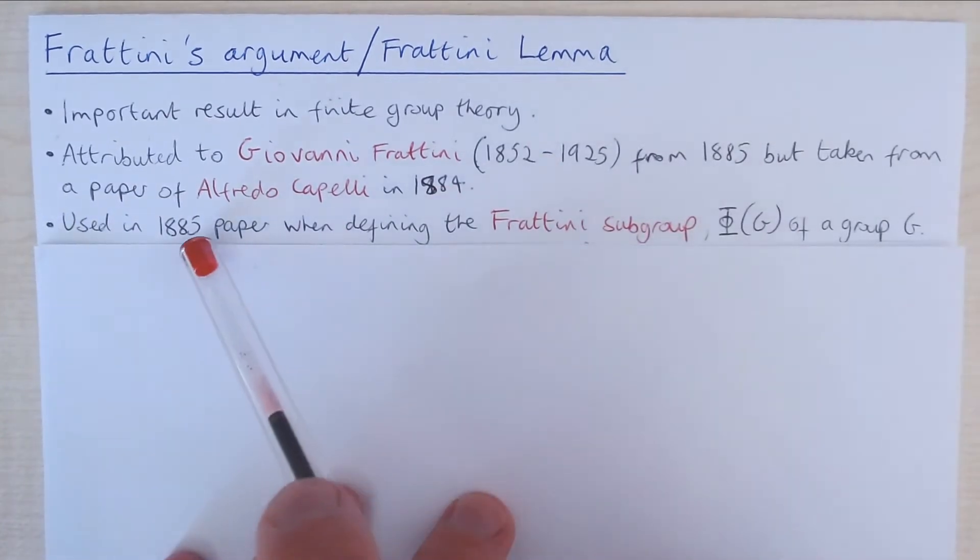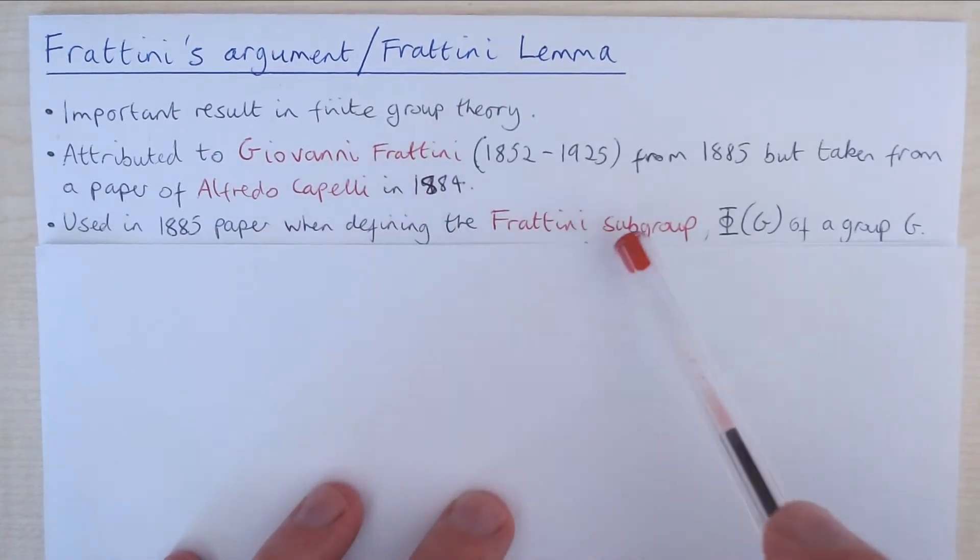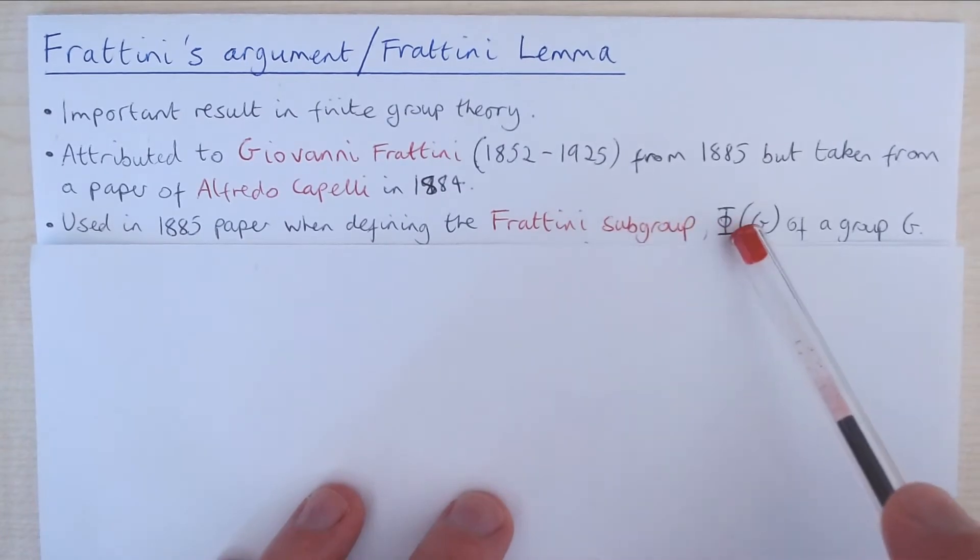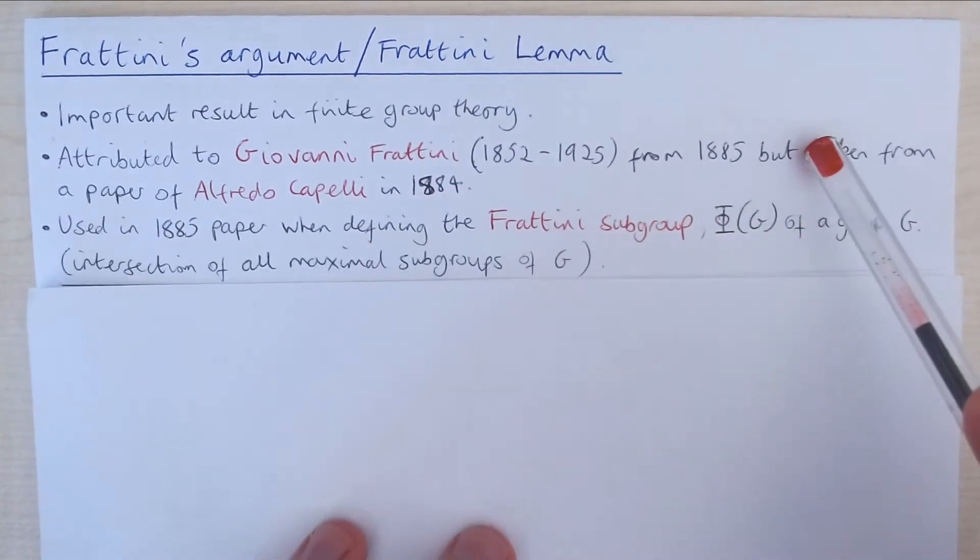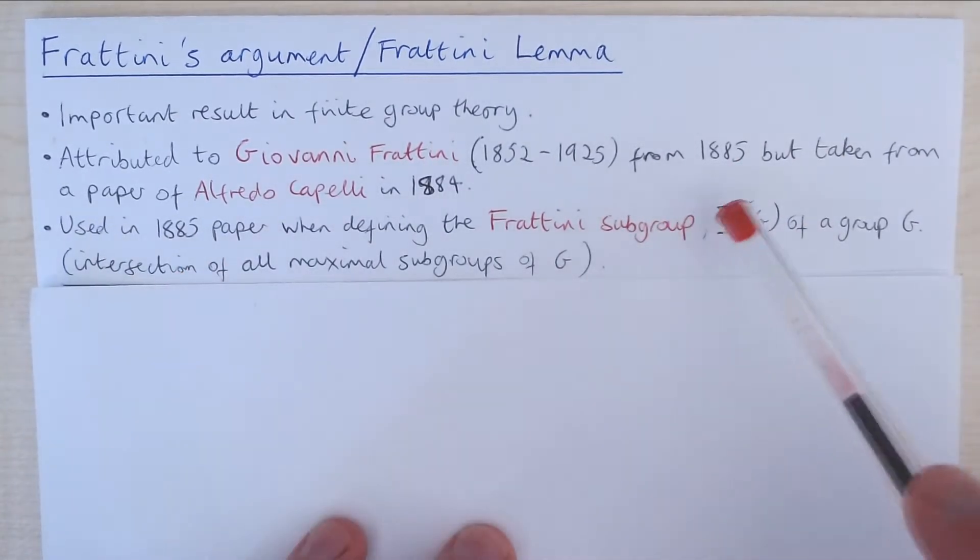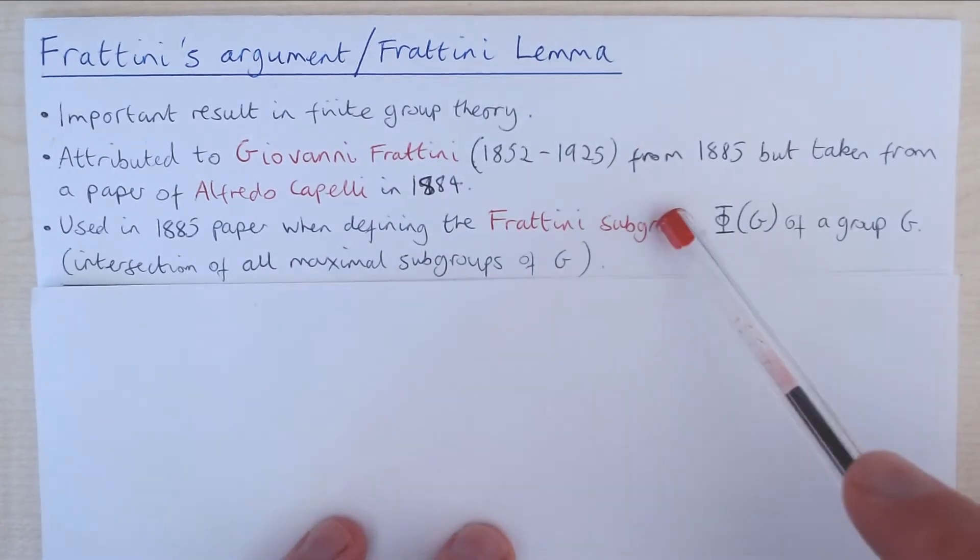The result was used in this paper from 1885 when Frattini defined what's now known as the Frattini subgroup of a group G, which is the intersection of all maximal subgroups of G.